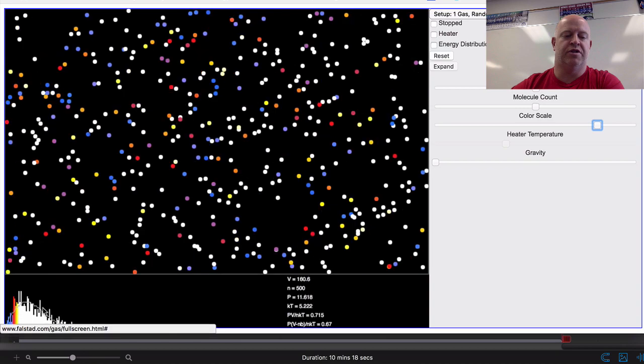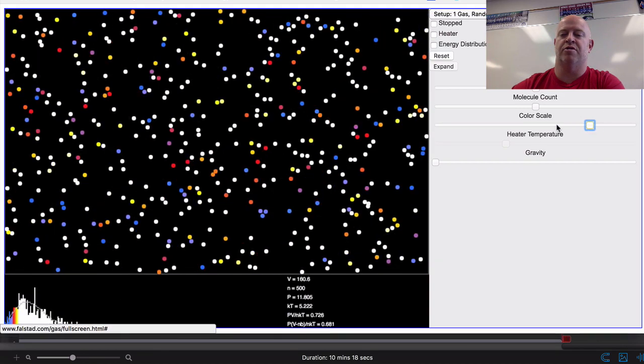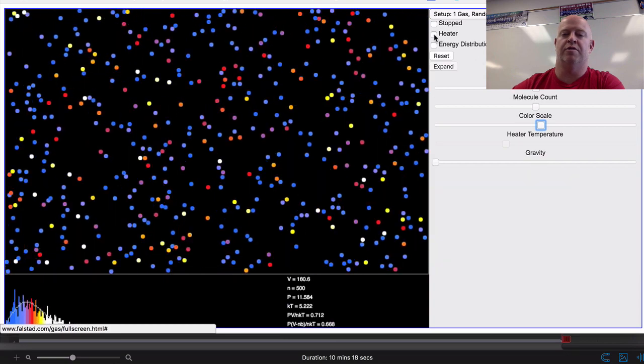So some particles are moving much faster, some particles are moving much slower as we do this. Now, one thing we can do is we can actually add a heater to it.